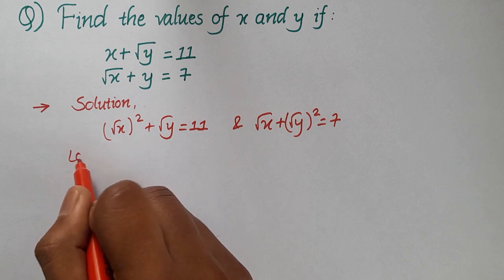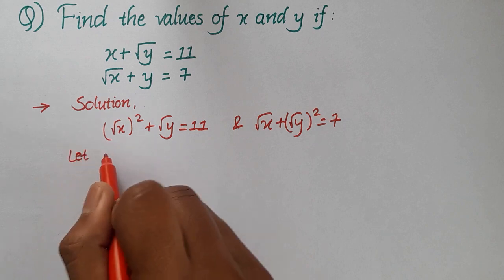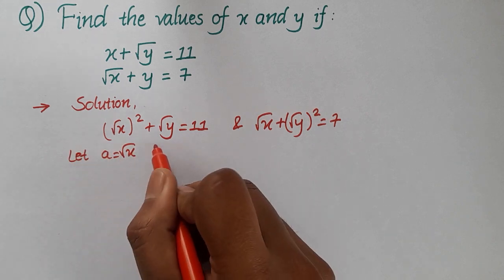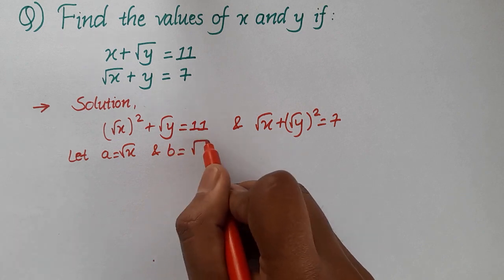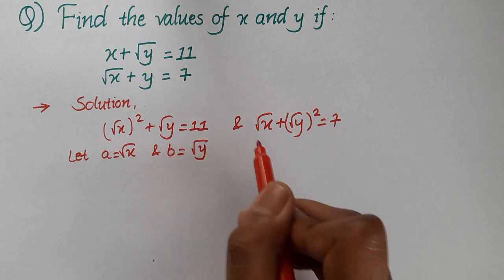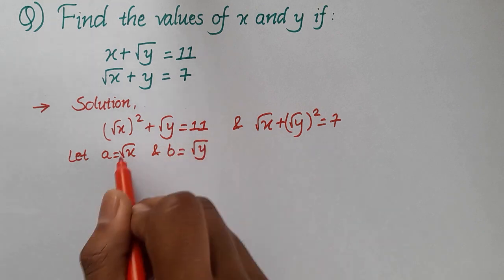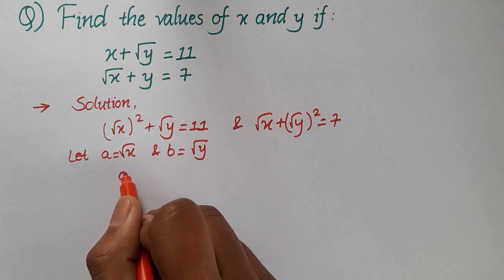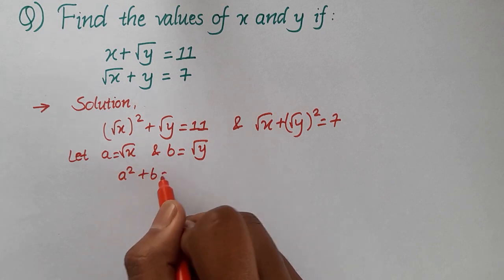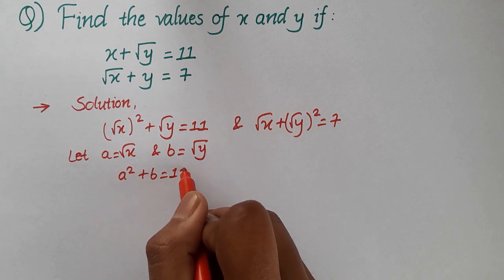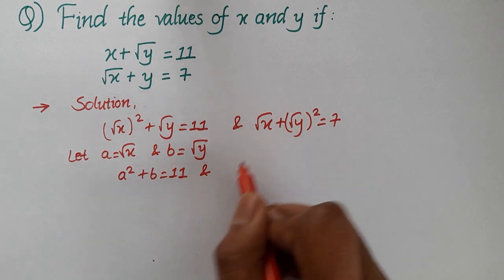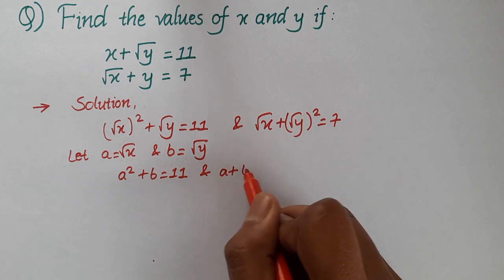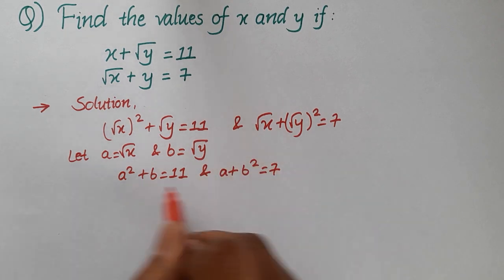Now let us assume that a is equal to root x and b is equal to root y. So if we replace these values in the equations above, then we will have a squared plus b is equal to 11 and a plus b squared is equal to 7.